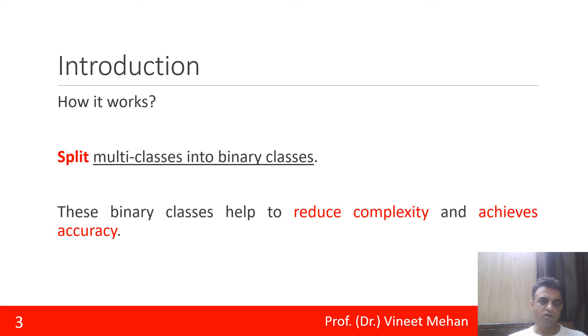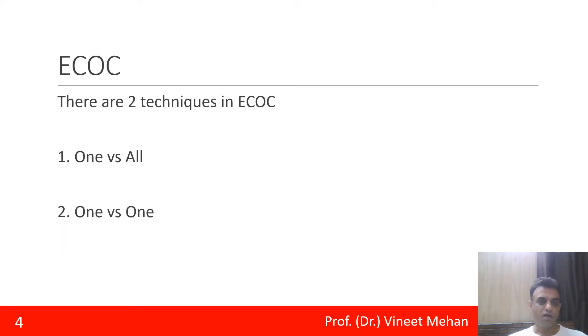Now how this works: it works by splitting the multi-classes into binary classes. So by splitting into binary classes we will try to reduce the complexity and thus achieving the desired accuracy in this case. Now there are two techniques in Error Correcting Output Codes: the first is one versus all technique and the second is one versus one technique.